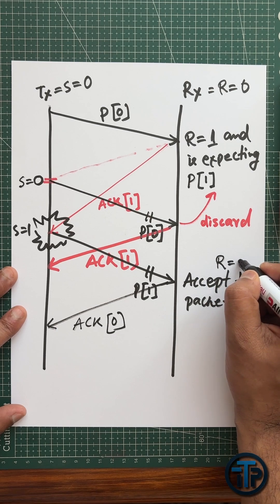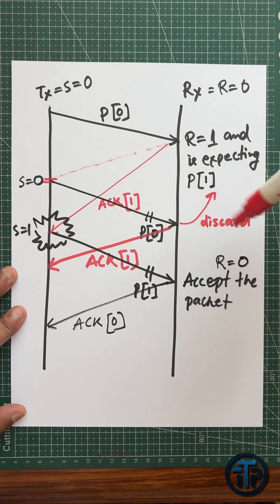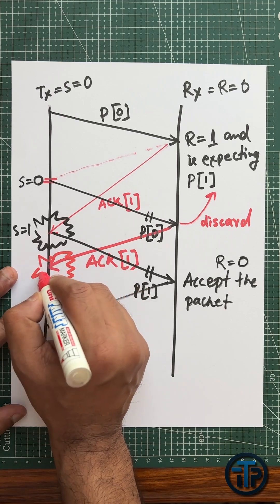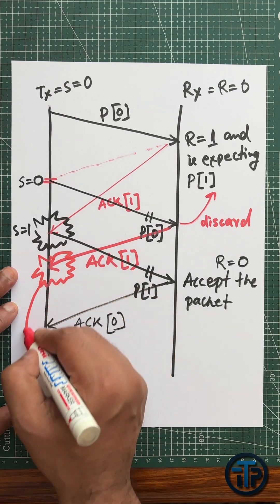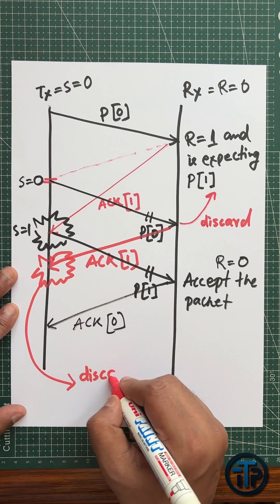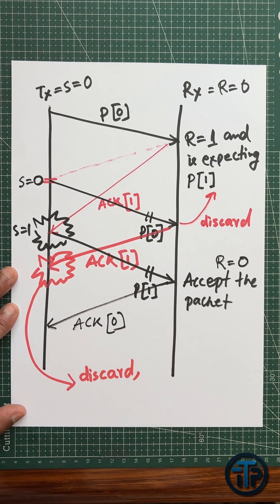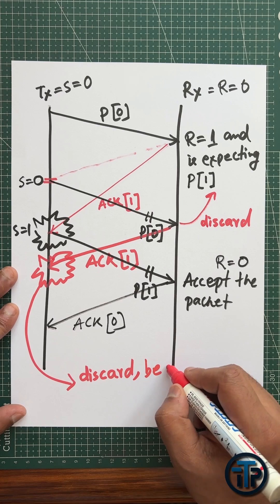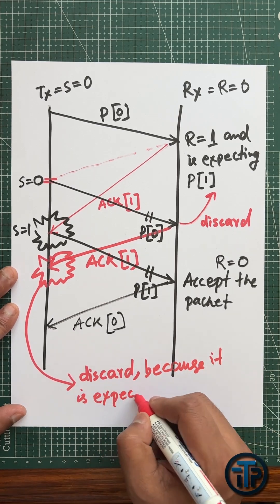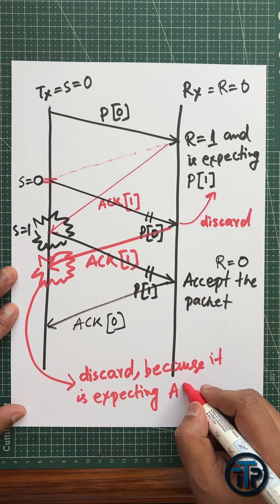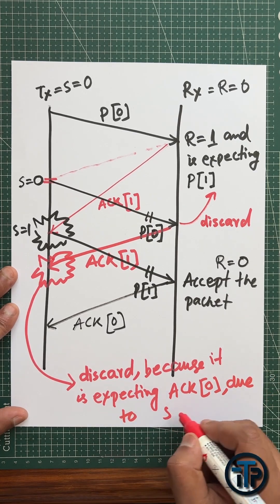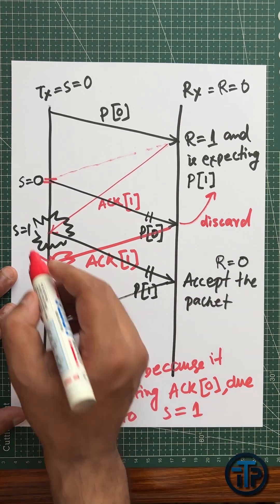Now what will happen to that second acknowledgement? It will simply be discarded. Because the previous s equals one, it is expecting acknowledgement zero. So whatever acknowledgement it receives — if it receives acknowledgement one — it will simply discard that acknowledgement.